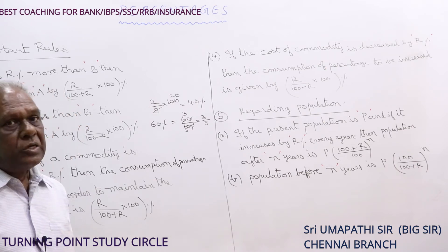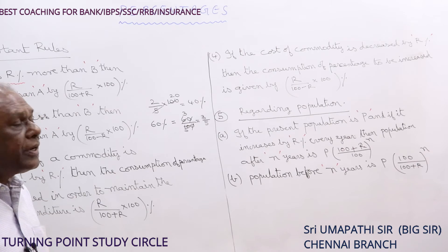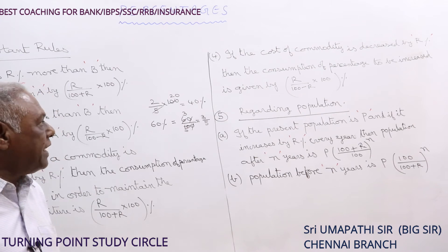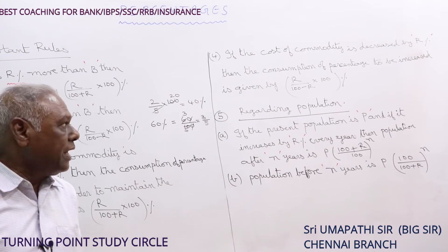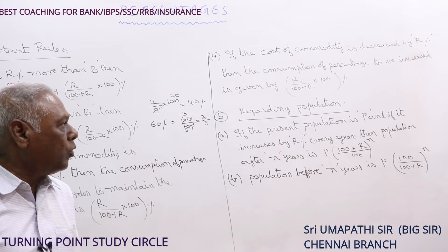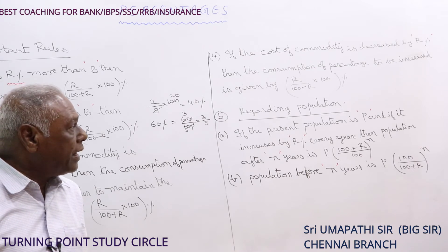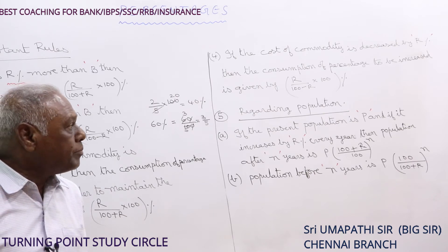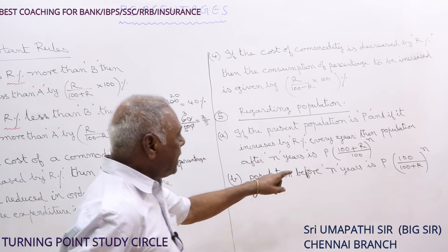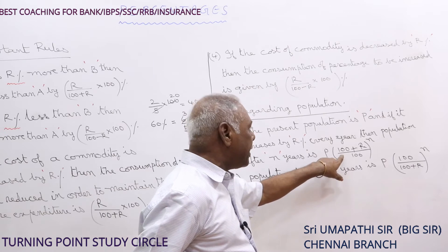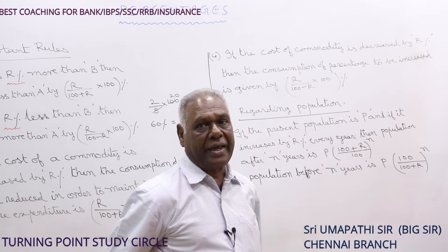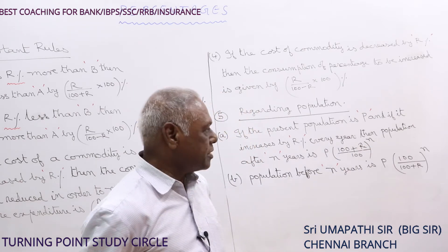Regarding population: if the present population of a town, city, or country is P and it is increased by r% every year, then the population after n years is P × (100 + r)/100 to the power of n. The population before n years is P × 100/(100 + r) to the power of n. Please observe: for population after n years, multiply by (100 + r)/100, and before n years it is reversed to 100/(100 + r). This must be remembered.